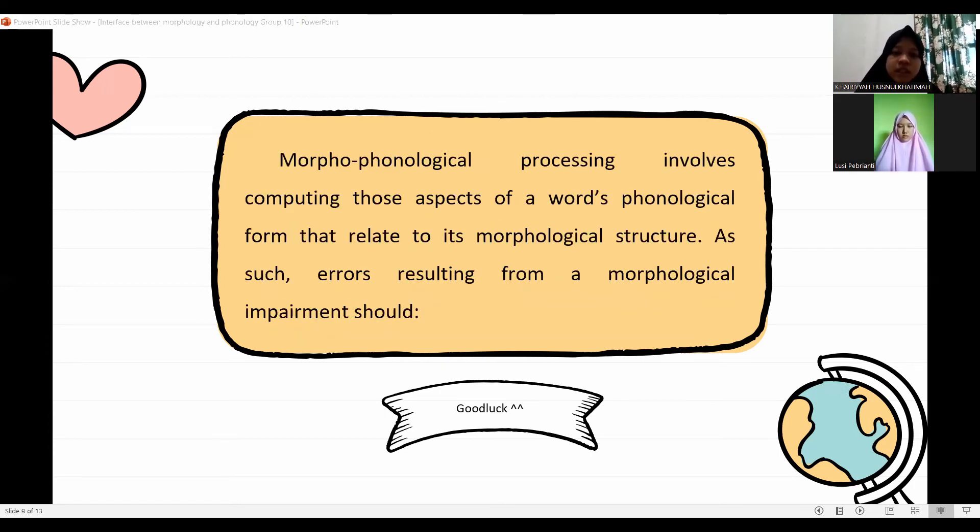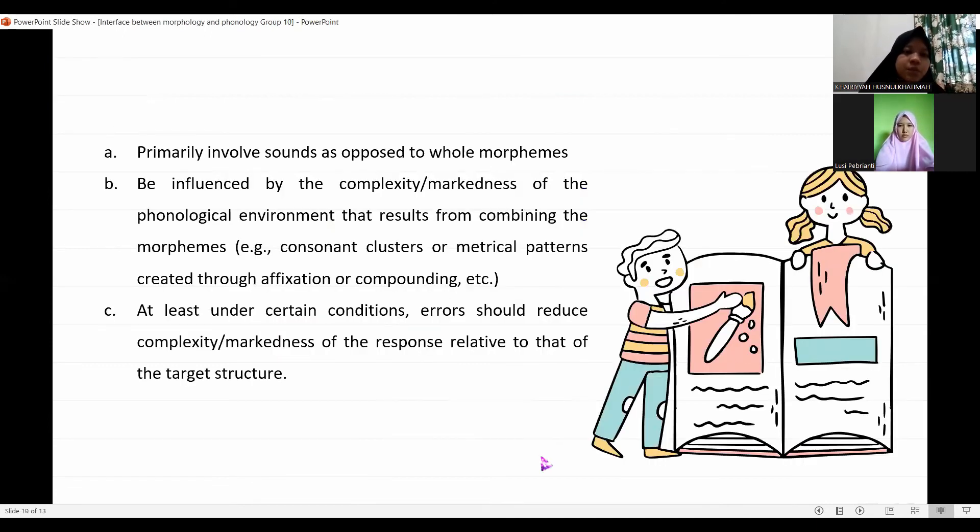Morphophonological processing involves computing those aspects of a word's phonological form that relate to its morphological structure. As such, errors resulting from a morphophonological impairment should: A, primarily involve sounds as opposed to whole morphemes; B, be influenced by the complexity or markedness of the phonological environment that results from combining the morphemes.